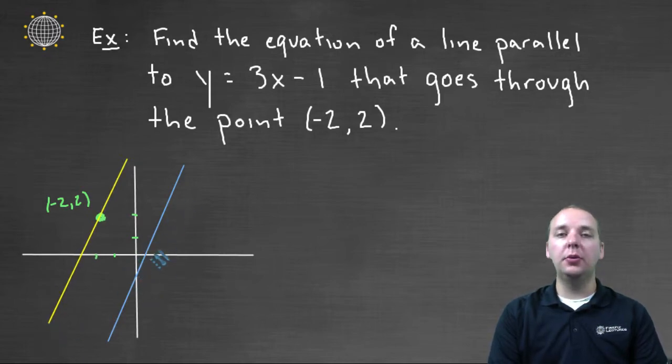So you see it's parallel to the blue line, but yet it goes through that green dot there. Right now, how on earth am I supposed to determine the equation of this yellow line right here? Well let's just think about it for a minute.